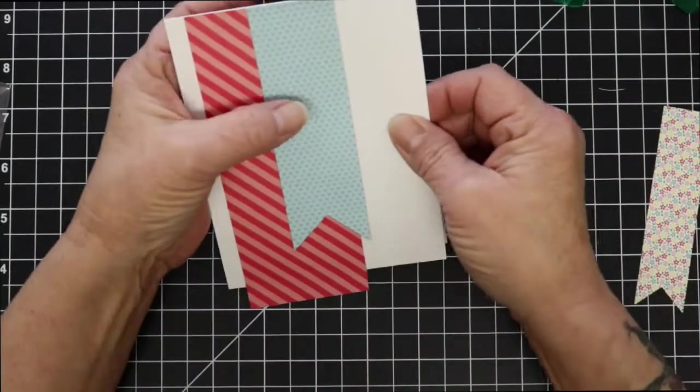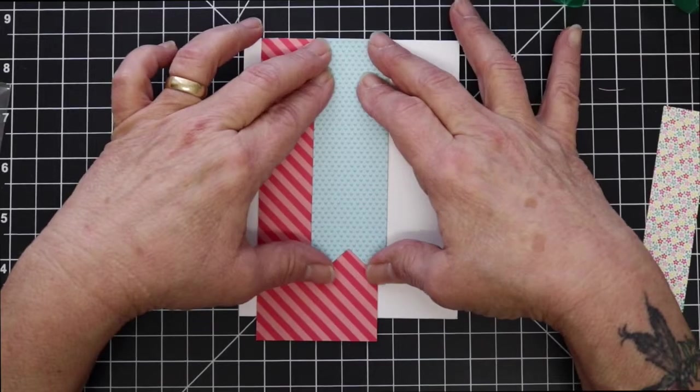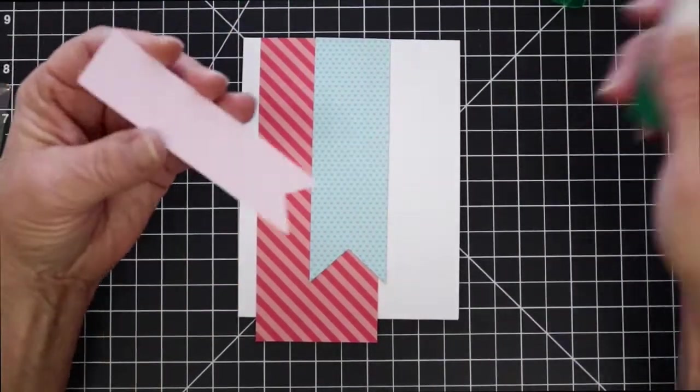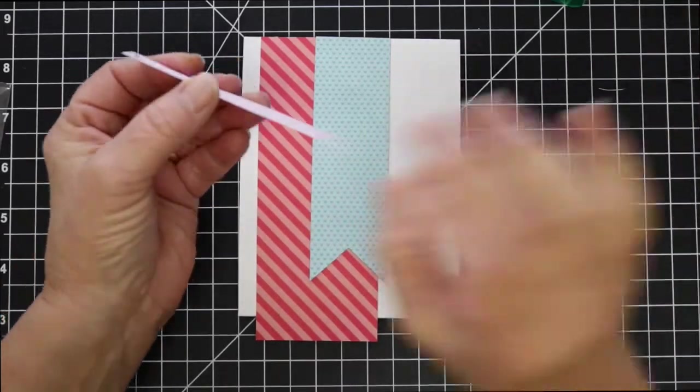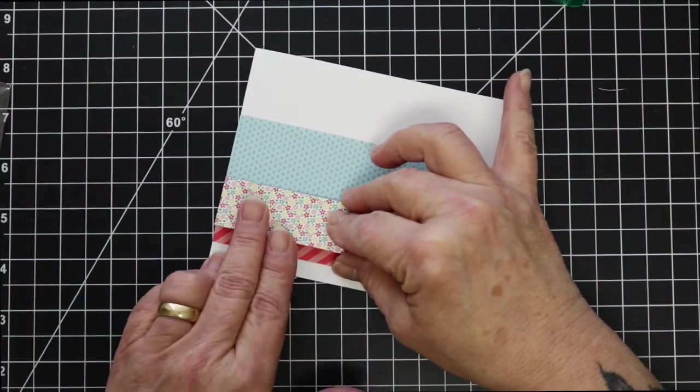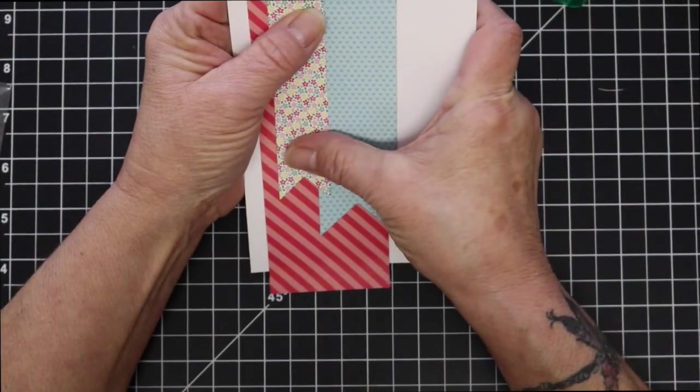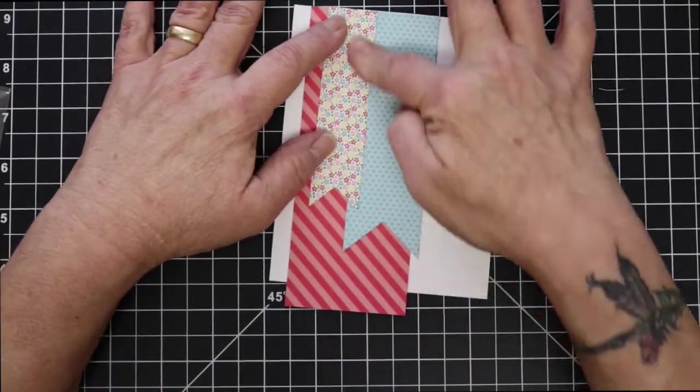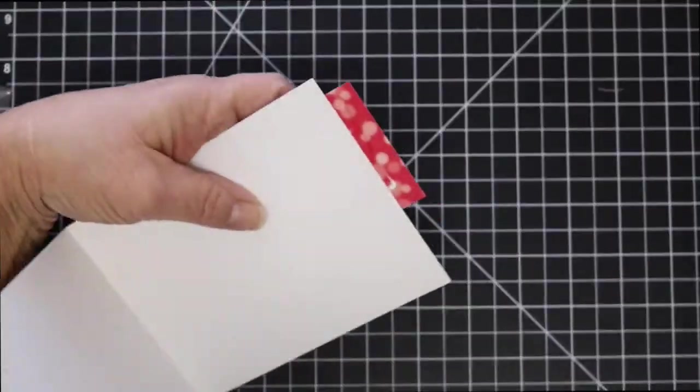I used the Simon Says Stamp simple banner dies to cut out two banners and I tried to pick papers that pretty much had the colors of the pencils that I used to color Newton. So I'm going to get those stuck down and then I'm going to trim off that longer red piece.